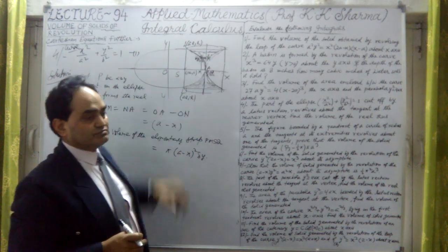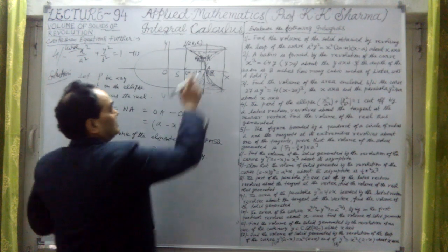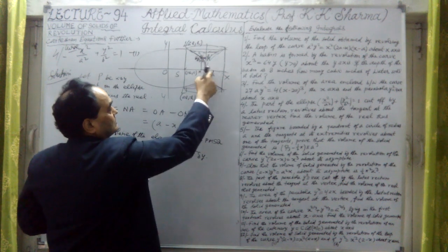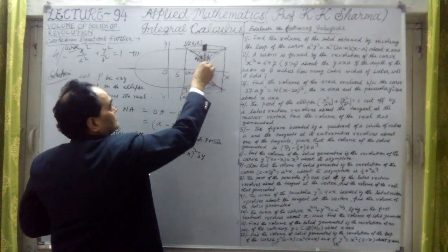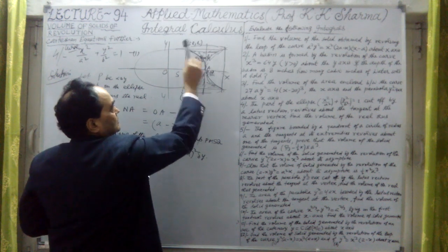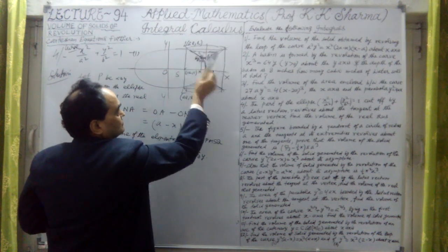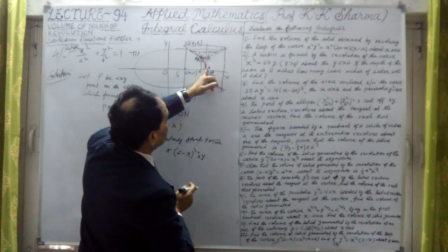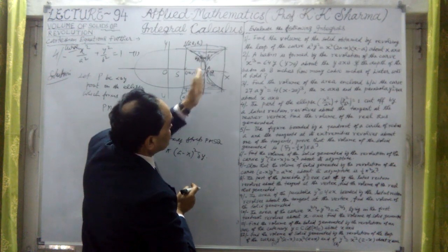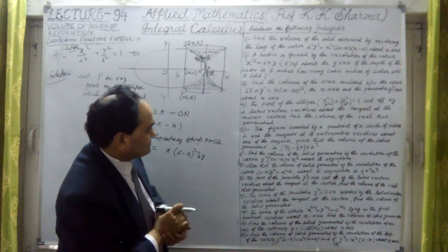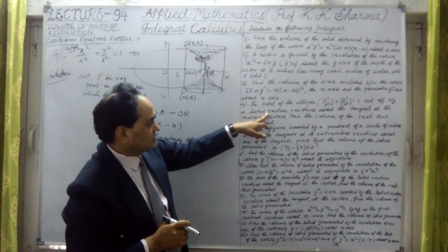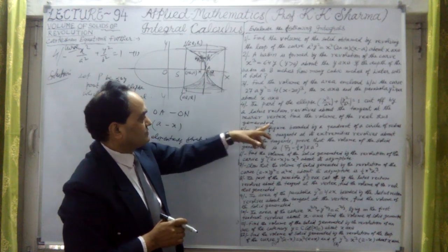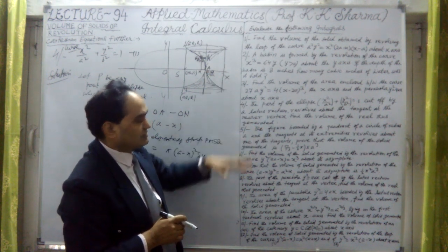Now for the limits: y will go from 0 to L, where L is this height. I have taken A here and L here because this is the length of the little latus rectum. The ellipse between the latus rectum and the vertex is revolved around the tangent at the vertex.